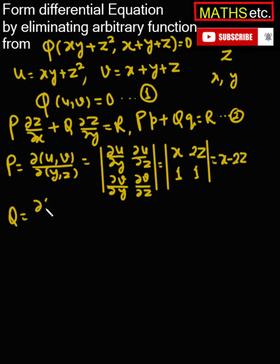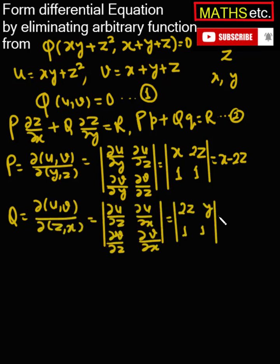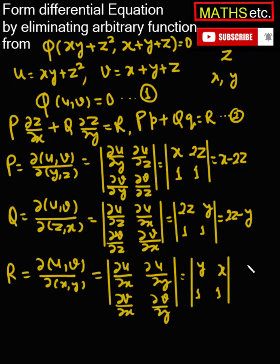q is the Jacobian of uv with respect to zx, and the value of this determinant is 2z minus y. r is the Jacobian of uv with respect to xy variables, and the value of this determinant is y minus x.